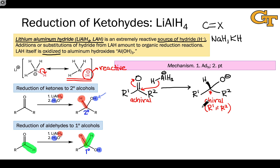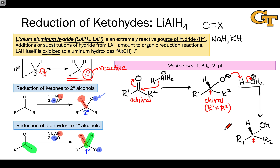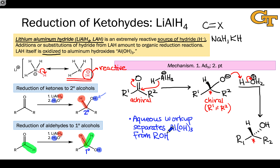This anionic intermediate is not something we can easily isolate, so what's done in workup is treatment with an acid — typically aqueous acid. This does two things. The first thing it does is protonate the alkoxide oxygen. The product is an alcohol, and here, because we started with a ketone, the product is a secondary alcohol. That proton transfer step doesn't change the stereochemistry, since all we've done is add a proton to oxygen. The aqueous workup also separates the aluminum hydroxide salts — the byproduct — from the alcohol, which is what we really want.